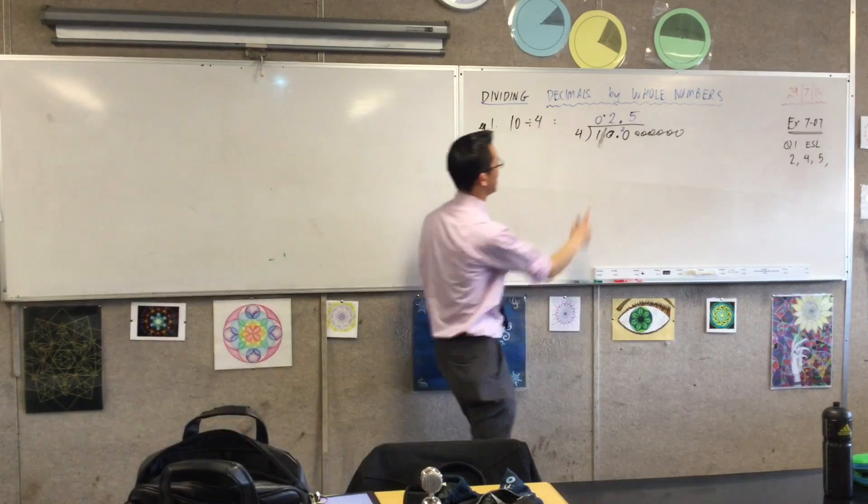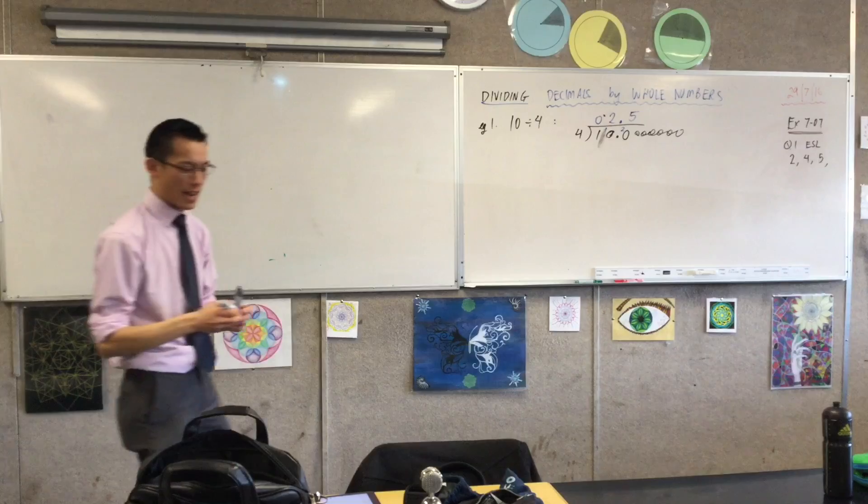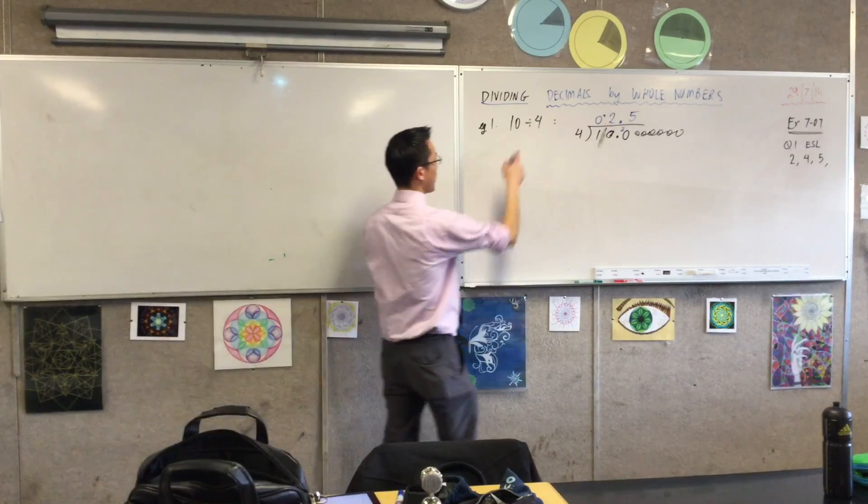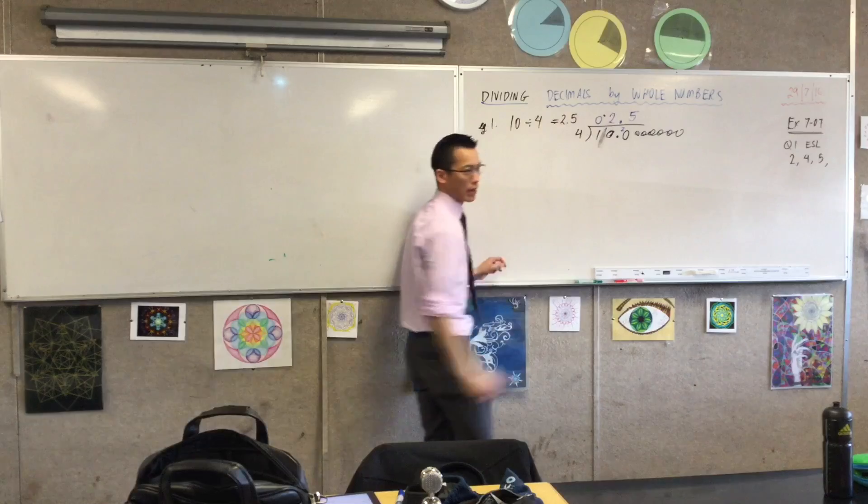So here's what I'm going to write down. I've got my 10 divided by 4 equals, apparently, 2.5. Okay?